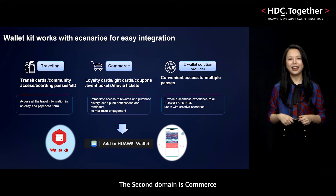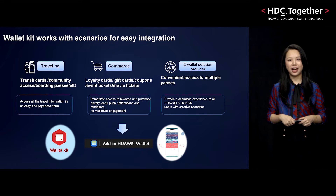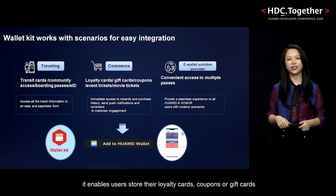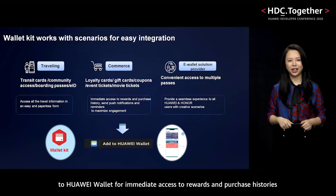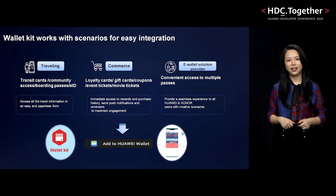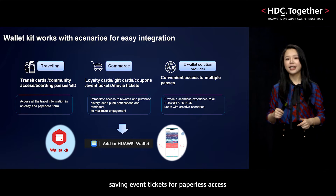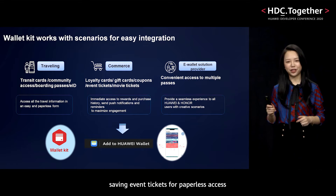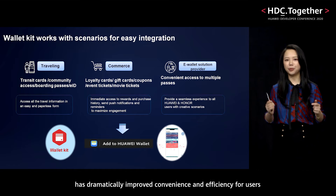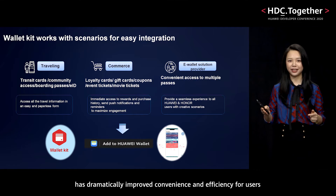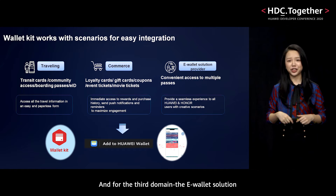The second domain is commerce. After integration with WalletKit, it enables users to store their loyalty cards, coupons, or gift cards to Huawei Wallet for immediate access to rewards and purchase accessories, as well as send push notifications and reminders to maximize engagement. In addition, saving event tickets for paperless access has dramatically improved convenience and efficiency for users.